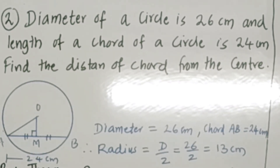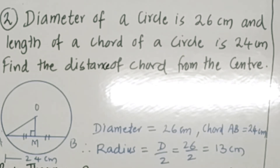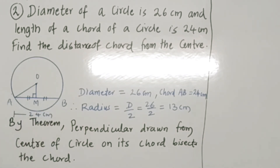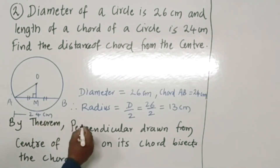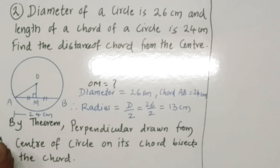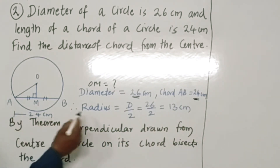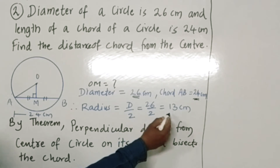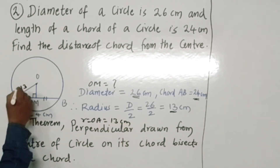Second example: the diameter of the circle is 26 cm and the length of the chord is 24 cm. Find the distance of the chord from the center of the circle. Let the circle have center O and chord AB. We need to find OM. Radius = diameter/2 = 26/2 = 13 cm, so OA = 13 cm.